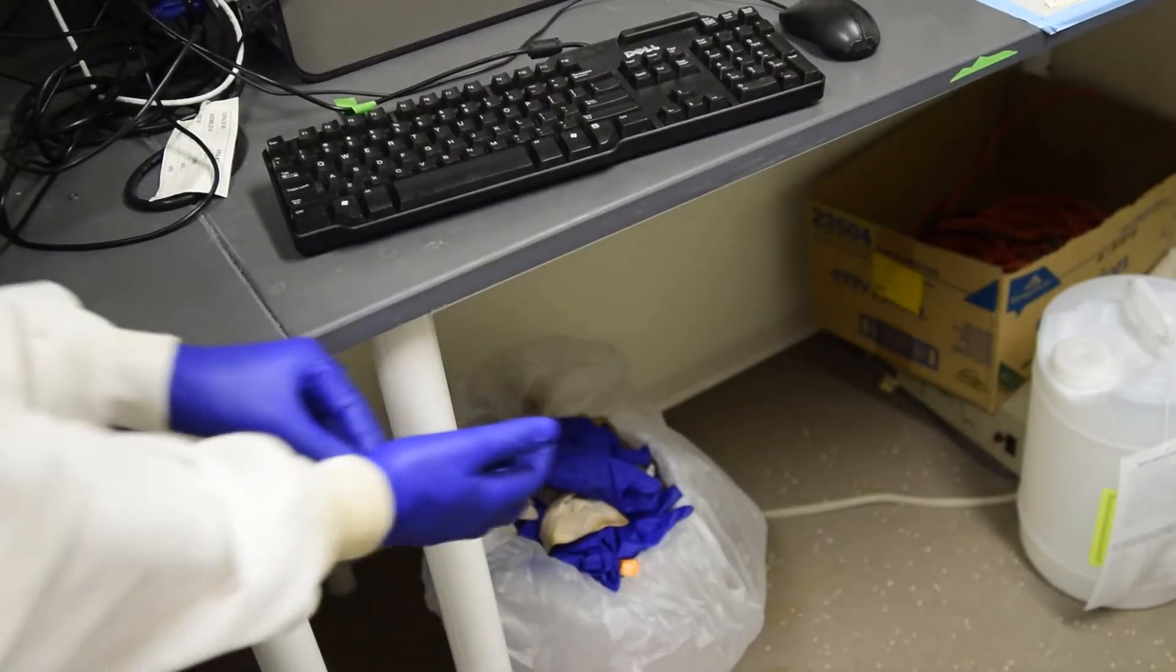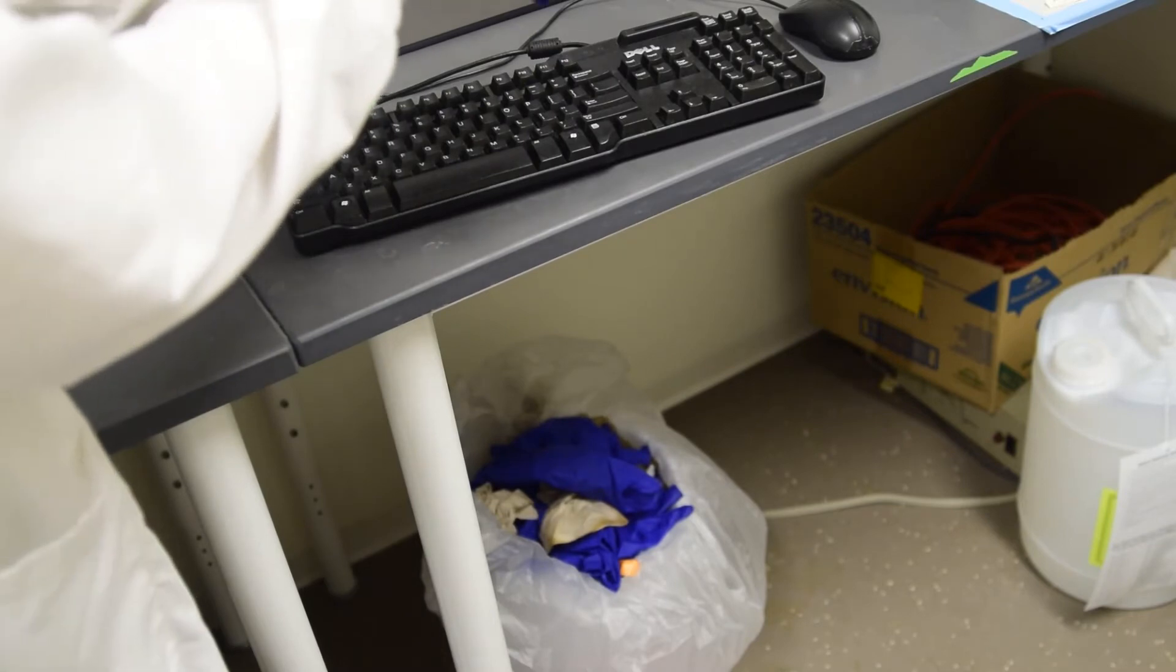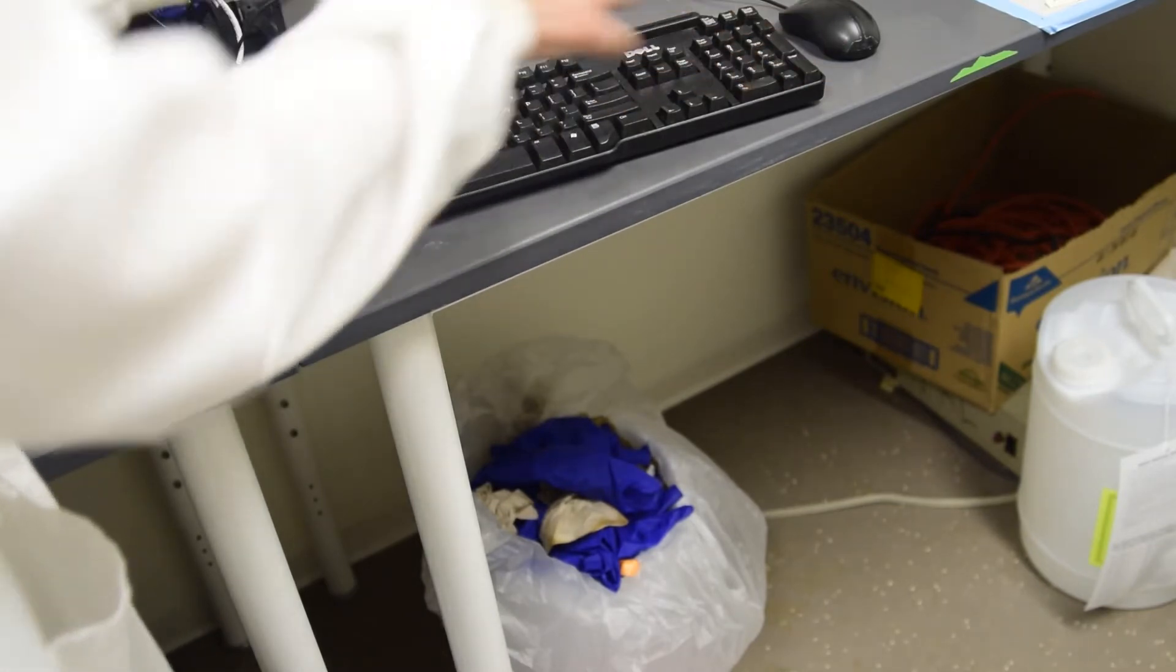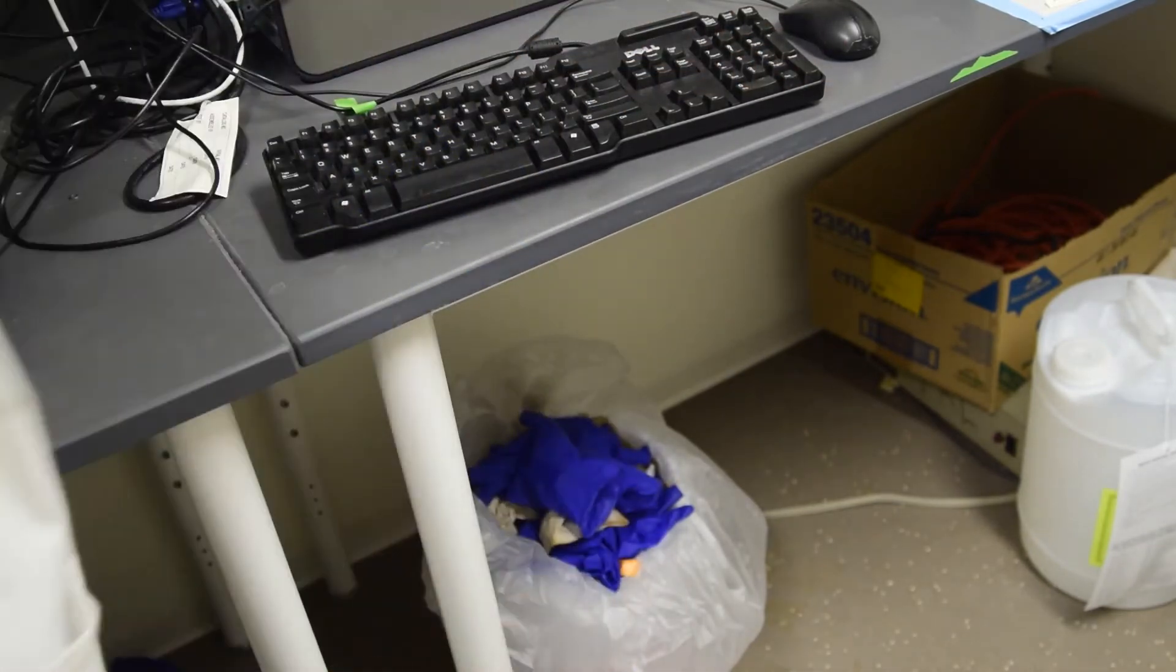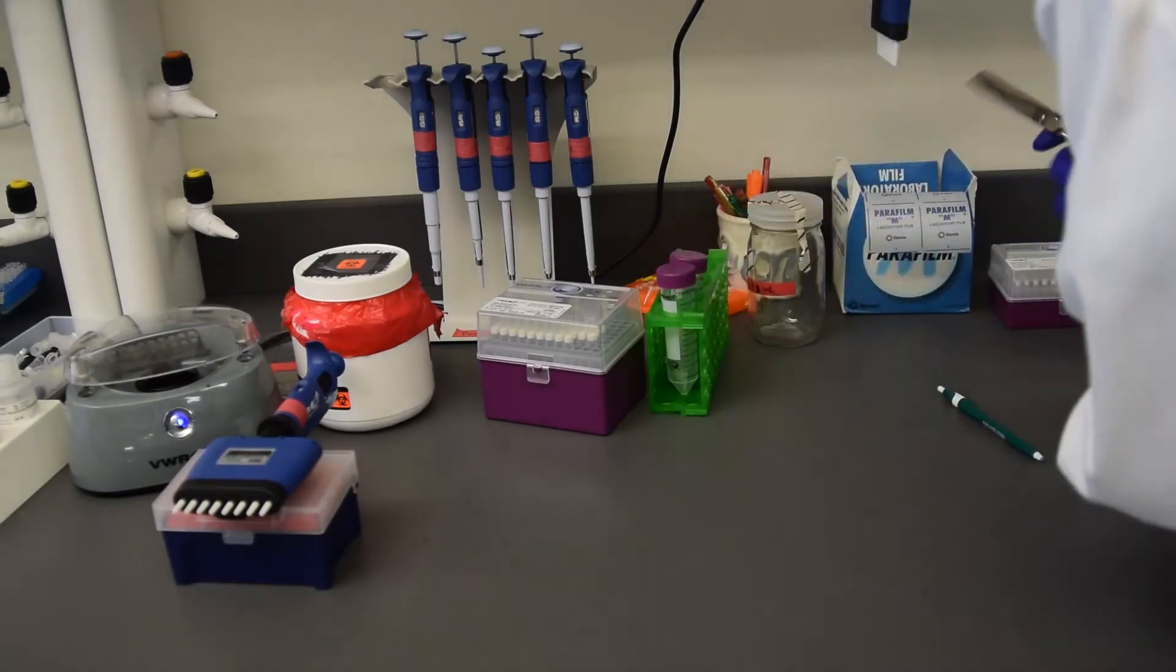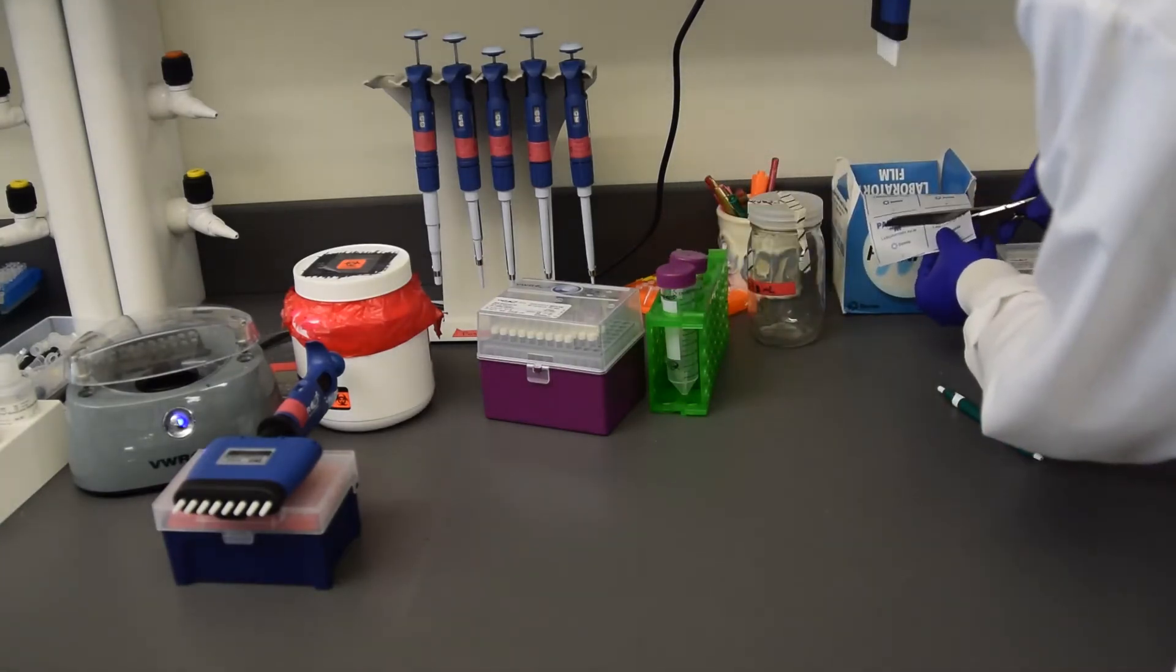Remove gloves carefully and place them in the ethidium bromide waste bin. Now we need the PCR product to load. Clean your work surface with ethanol and let dry.